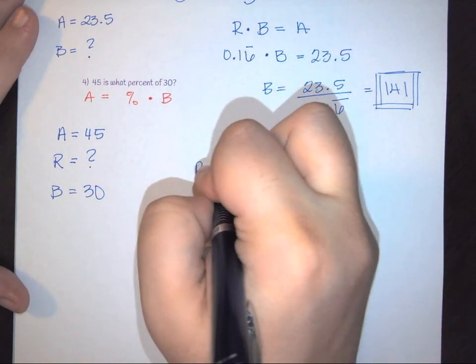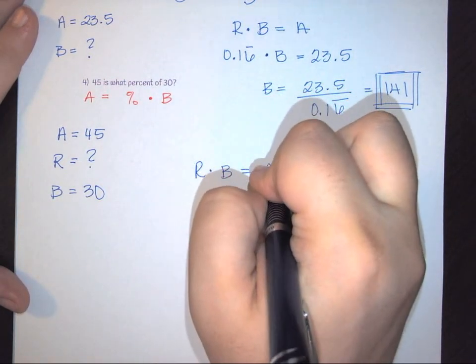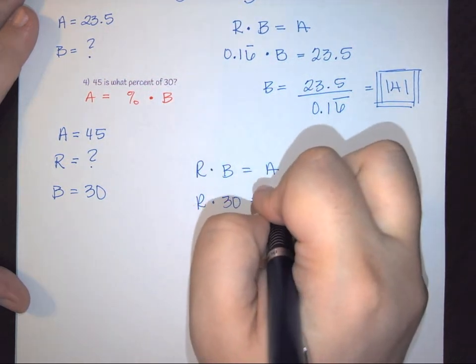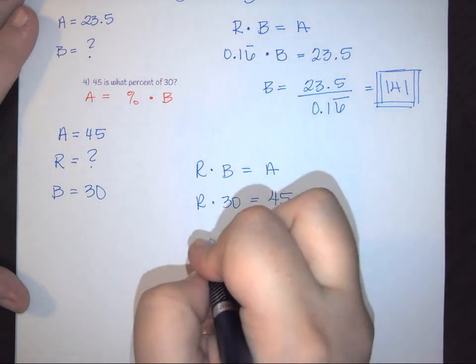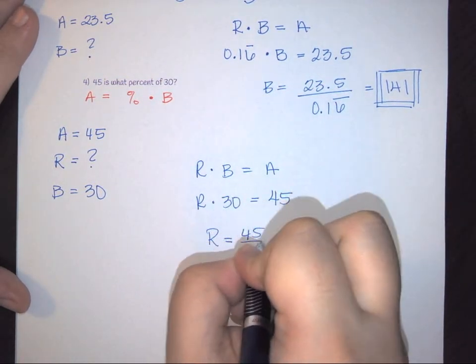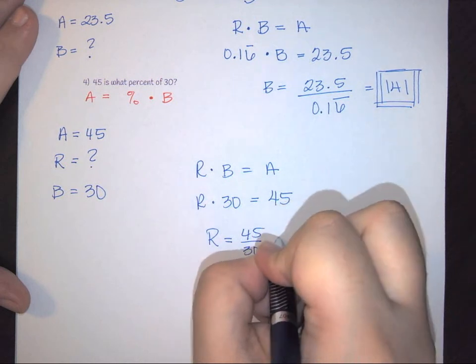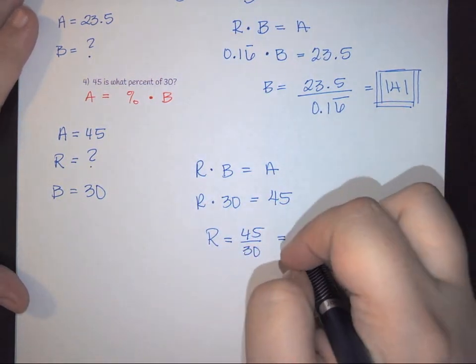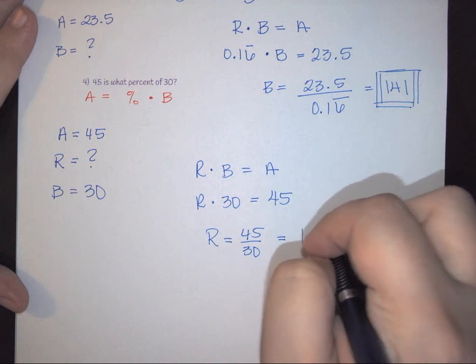So again, R times B equals A. So R times 30 equals 45. So your rate is going to be 45 over 30. And so this is going to end up giving you 1.5.